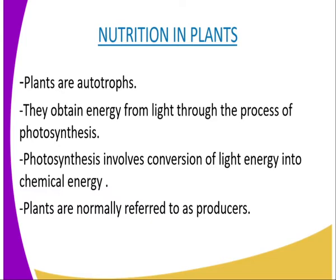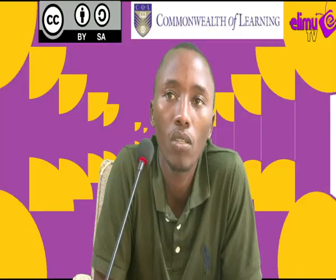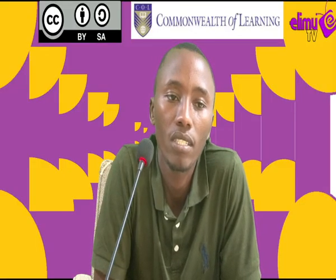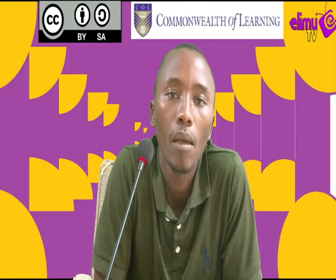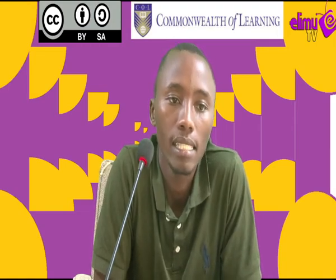Some bacteria make their own food using energy derived from chemical reactions in a process known as chemosynthesis. Plants, on the other hand, make their own food using energy from light in a process known as photosynthesis. The difference is that chemosynthesis involves chemicals, while photosynthesis involves light — as we know, 'photo' means light.